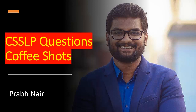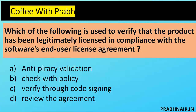Without wasting time, let's start with the first question. Which of the following is used to verify that the product has been legitimately licensed in compliance with the software and user license agreement? The question is asking: what is the process we use to verify whether an application is compliant with its license? Option A is anti-piracy validation, which is like an online check.